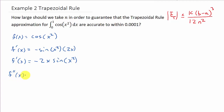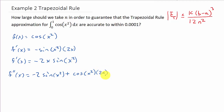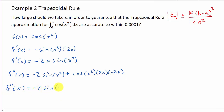The first derivative is f prime of x: the derivative of cosine is negative sine, times the derivative of what you're taking the cosine of, giving f prime of x equal to negative 2x sine(x²). Now I need the second derivative. Using the product rule: derivative of negative 2x is negative 2 times sine(x²), plus the derivative of sine(x²) which is cosine(x²) times 2x, times the first function negative 2x. So f double prime of x equals negative 2 sine(x²) minus 4x² cosine(x²).